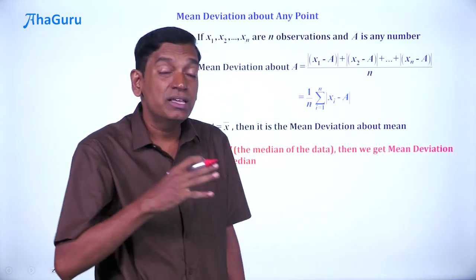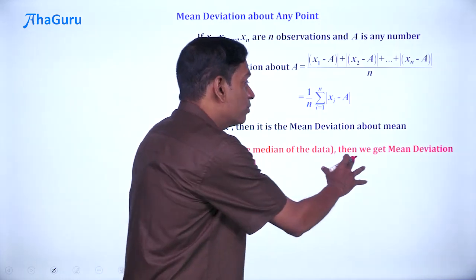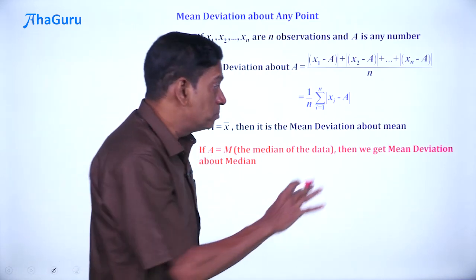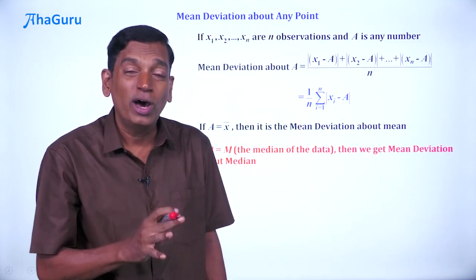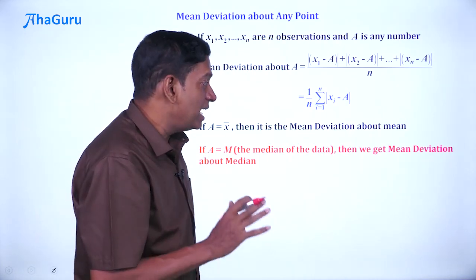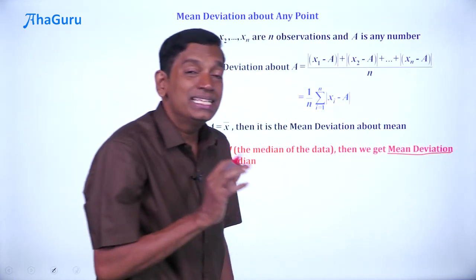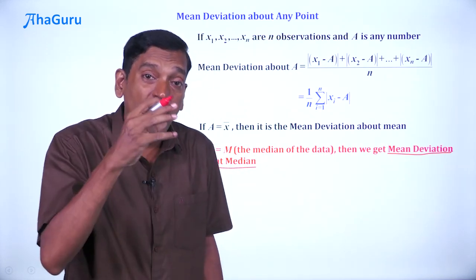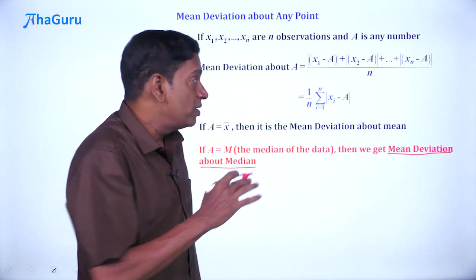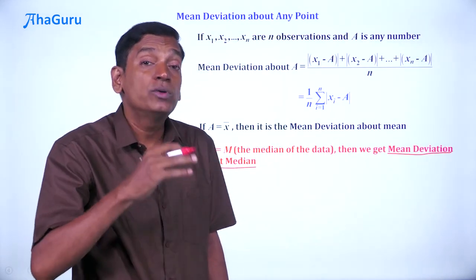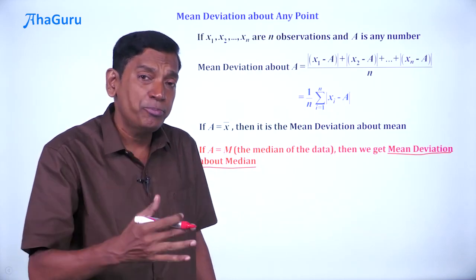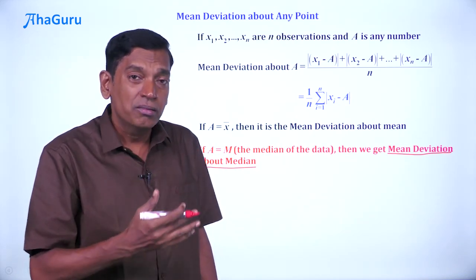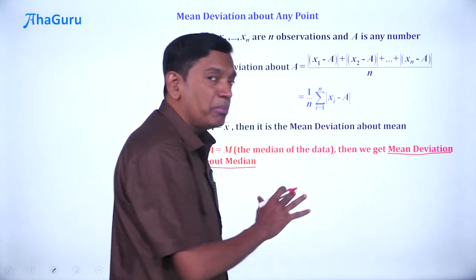If a is equal to M, which is the median of the data, then we get what is known as the mean deviation about median. Now, many people get confused about this terminology because both mean and median are there in one phrase. So the important thing is to understand that mean deviation means it is the average of deviations. About the median means you are taking the deviation about the value M. We are always going to find mean deviation; about which point is the question? About mean, median, any point you can calculate the mean deviation. Usually, MD about mean is what is used, but sometimes you can also look at the MD about the median.